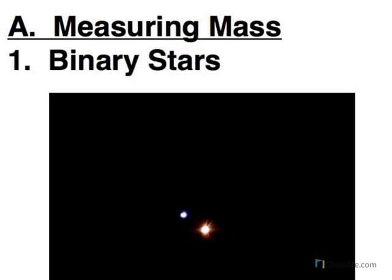In astronomy, the easiest way to measure the mass of something is if you have another object orbit that object, the object that you're interested in.